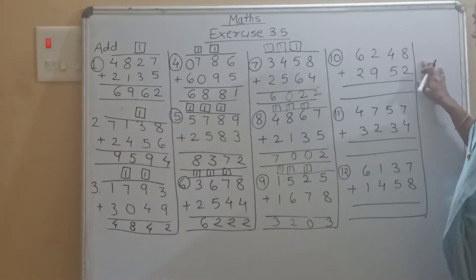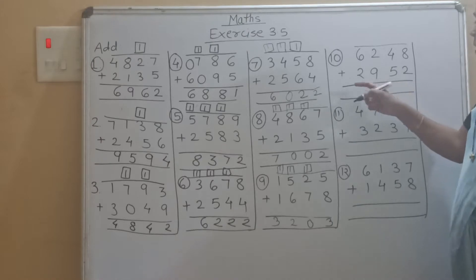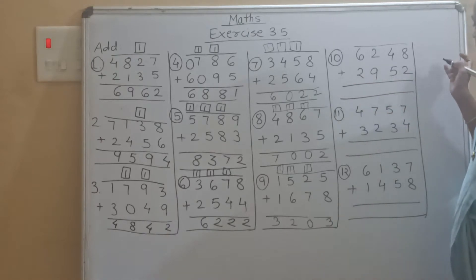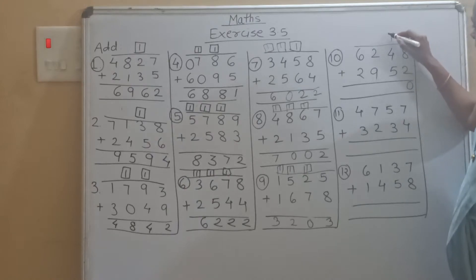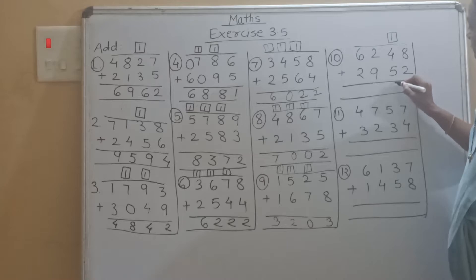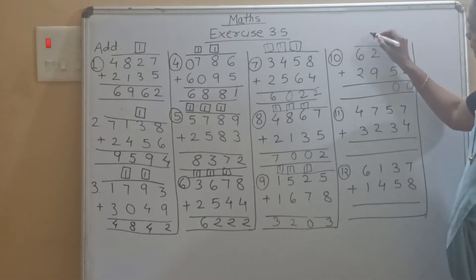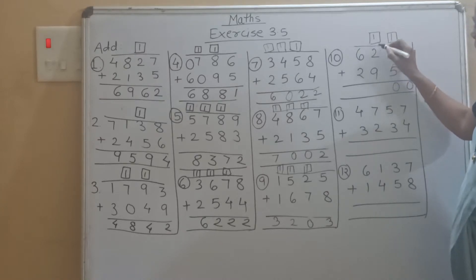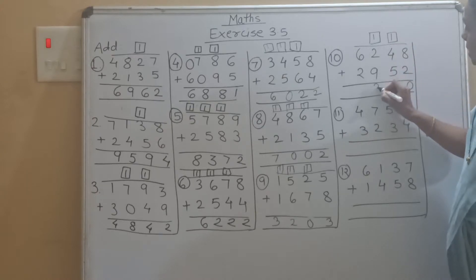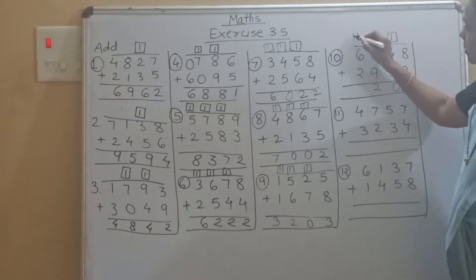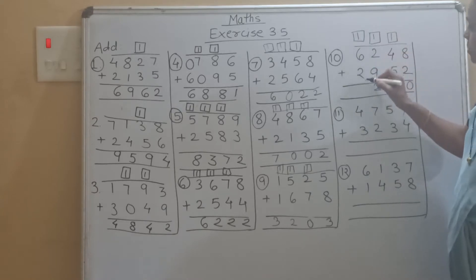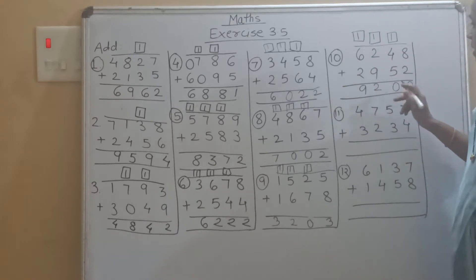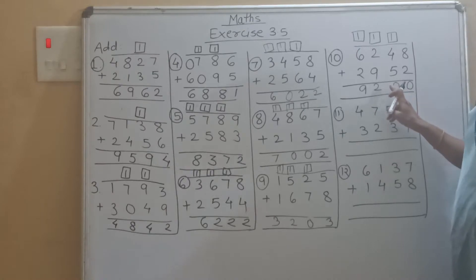Now see the tenth example: 6248 plus 2952. So 8 plus 2 is 10, carry 1. Then 4 plus 1 is 5, 5 plus 5 is 10, carry 1. Then 2 plus 1 is 3, 3 plus 9 is 12, carry 1. Write down in the box. Then 6 plus 1 is 7, 7 plus 2 is 9. So the answer is 9200.